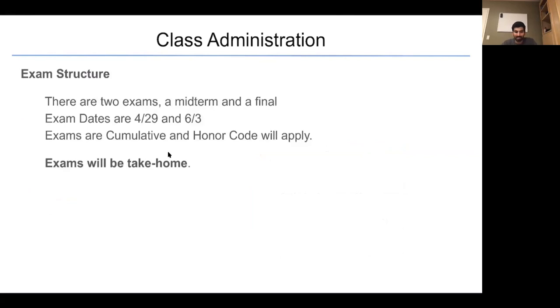The exam structure. There are two exams, a midterm and a final. These are the exam dates, 4-29 and 6-3. The exams will be cumulative and honor code will apply. Now, in this unique situation for coronavirus due to COVID, we will make exams take home. They will be the same length as if we were giving an in-class exam, but you will have access to the full day. You will have access to notes and you will have access also to the internet. So exams will be take home and you will have full access to online resources except your classmates. So please do not ask your classmates for solutions because exams must be done individually.